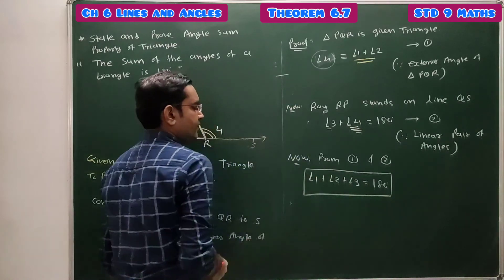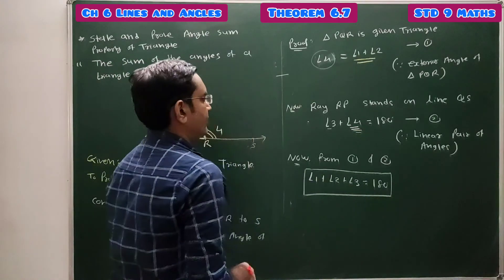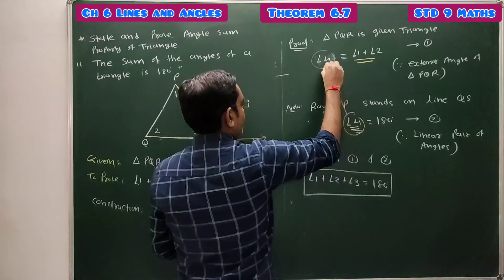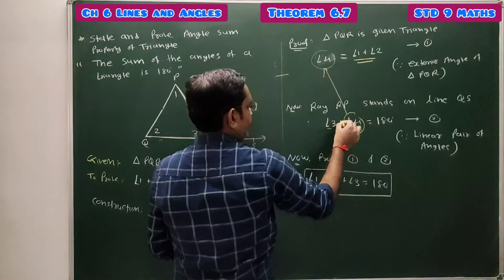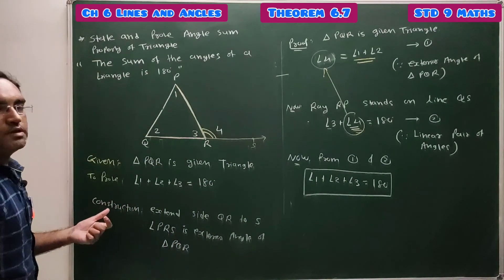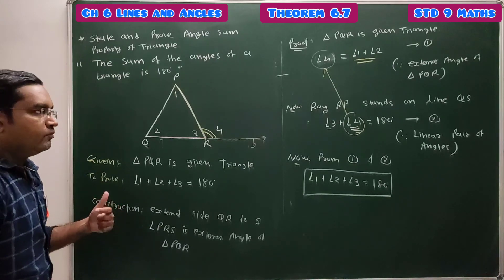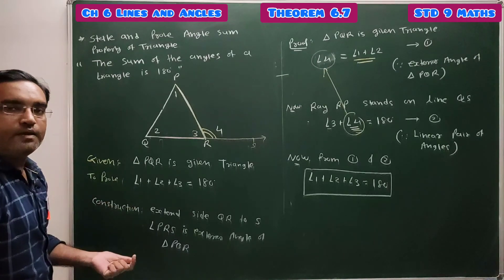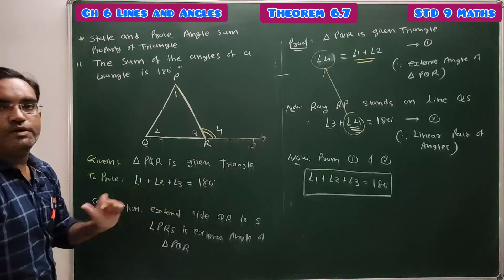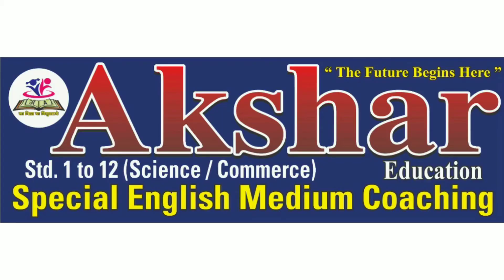Angle 1 + angle 2 + angle 3 is the sum of all the angles of the triangle, which equals 180 degrees. So both methods prove the angle sum property of triangle. There are two methods — both are important. You have to learn both, and in your exam you can use either method. Pause the video and do more practice.